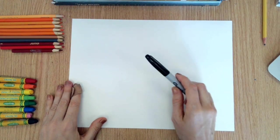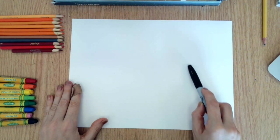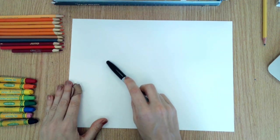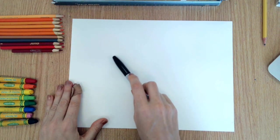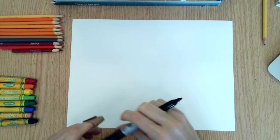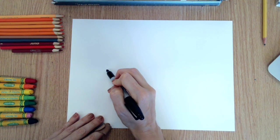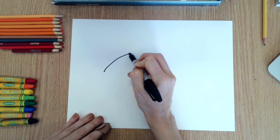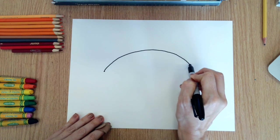The first shape we're going to make is gonna be a curved line, kind of like a rainbow, the top of a rainbow. So watch me, I'm gonna start here and go like that. We don't want it too high.